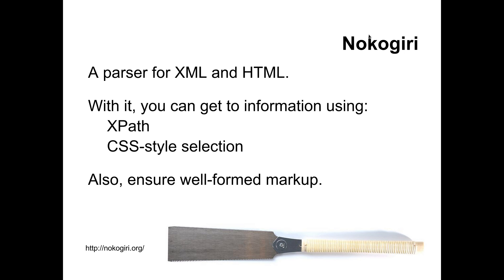You can also use Nokogiri to examine a document and tell you if there are any errors in the markup, so you can use it to ensure well-formed markup. Incidentally, Nokogiri in Japanese is a type of handsaw that cuts on the pull stroke.